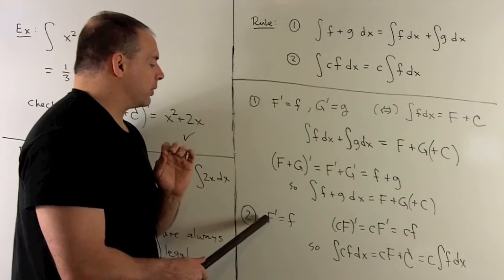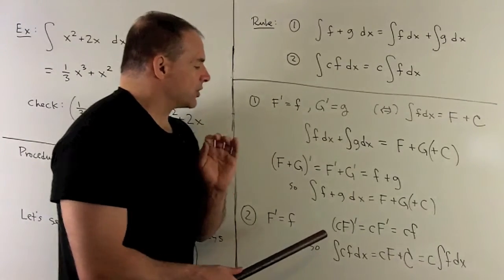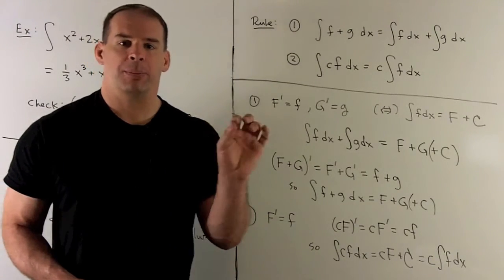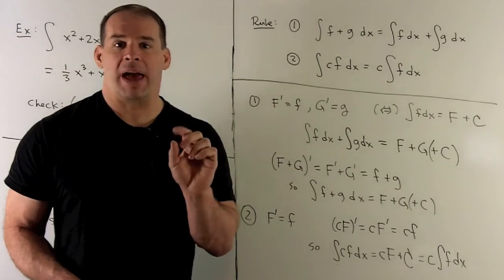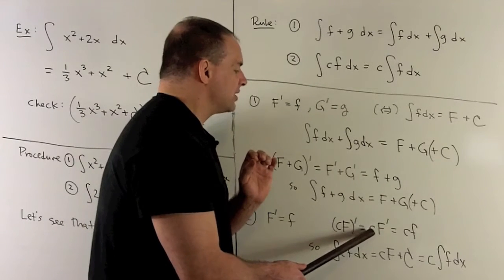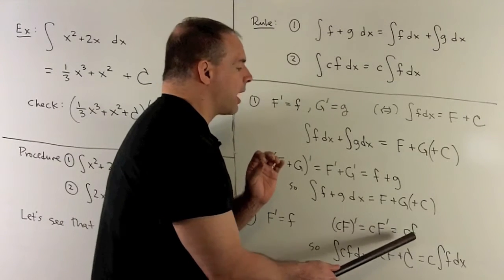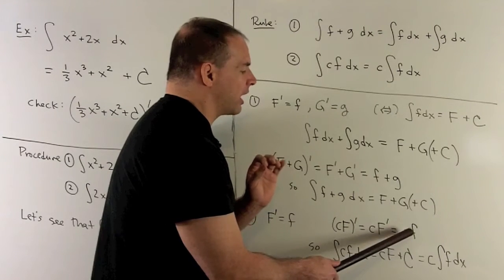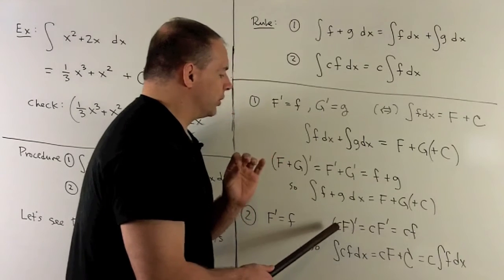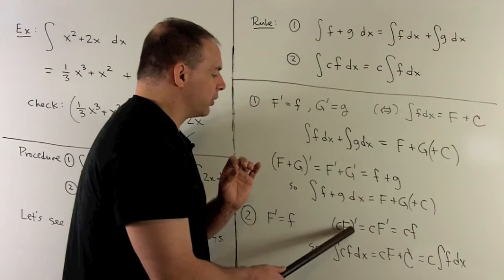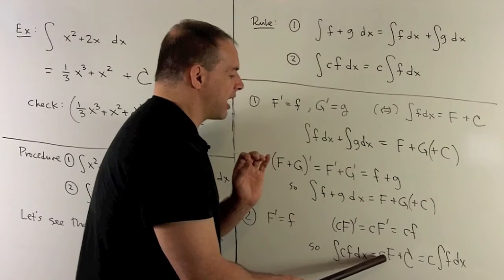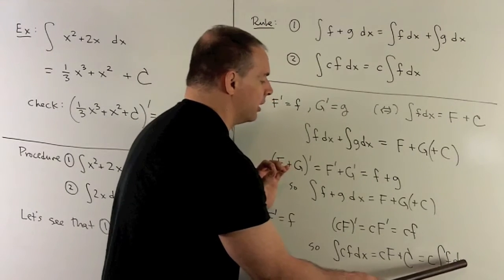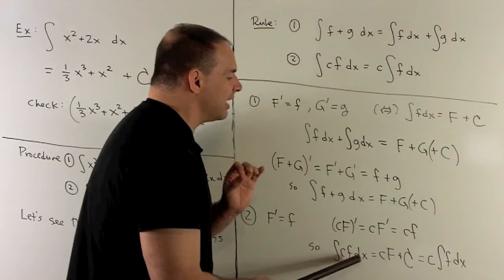So capital F plus capital G equals the indefinite integral of both terms on the inside, which also equals what we get when we break it apart. That's our first rule. For the second rule, assume capital F prime equals little f. If I take a constant times capital F and take the derivative, our rule says you put the constant on the outside, take the derivative, and bring the constant back in. So we get our constant times capital F prime, which equals the constant times little f. This says the indefinite integral of our constant times f equals the constant times capital F — meaning we've moved the constant from inside to outside.